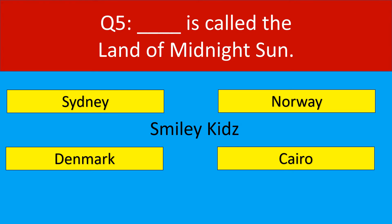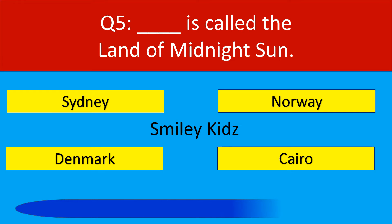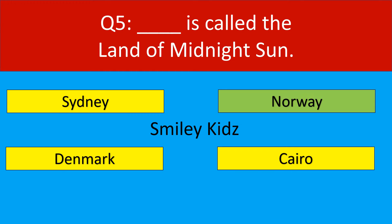Question number 5. Dash is called the land of midnight sun. Your options are Sydney, Norway, Denmark, Cairo. Your time starts now. Your time is up. The correct answer is Norway. Norway is called the land of midnight sun.